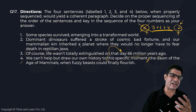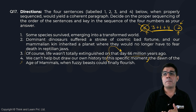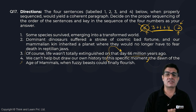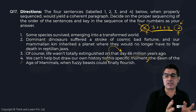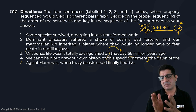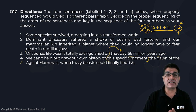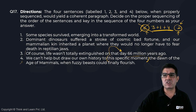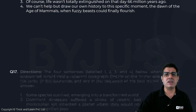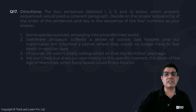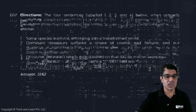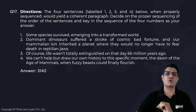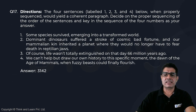Does sentence two flow naturally from four? No, but since it cannot be put at the beginning — that's very absurd — we put it at the end. Therefore, our answer for question number 17 is three, one, four, two. That's our Parajumble solved.